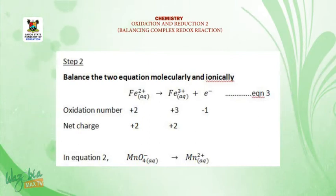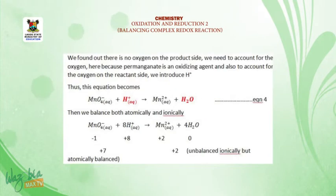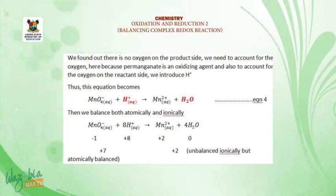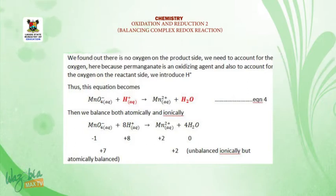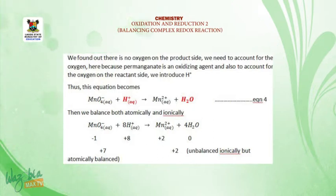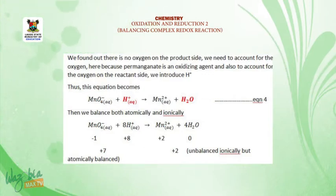For equation 2, MnO₄⁻ → Mn²⁺, there is no oxygen on the product side. To account for the oxygen on the reactant side, we introduce hydrogen ions. Thus, this equation becomes MnO₄⁻ + H⁺ → Mn²⁺ + H₂O. This becomes equation 4.